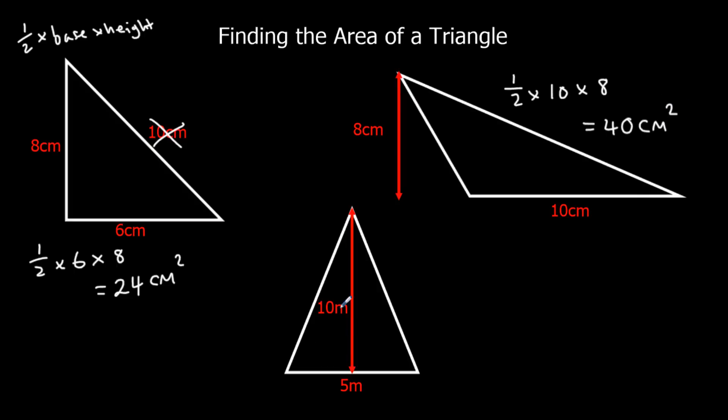And this one's in meters, but that doesn't make a difference. So half times base, which is 5, times the height, which is 10. In this case, I think it's easier to times these first, and then half it. So 5 times 10 is 50. And half of 50, that's 25 meters squared this time.